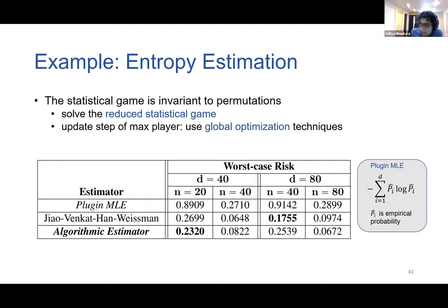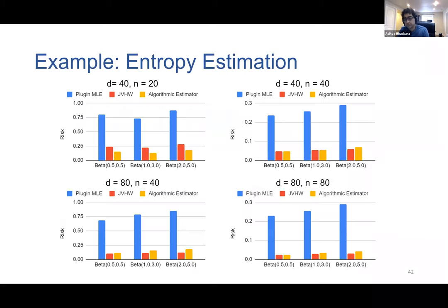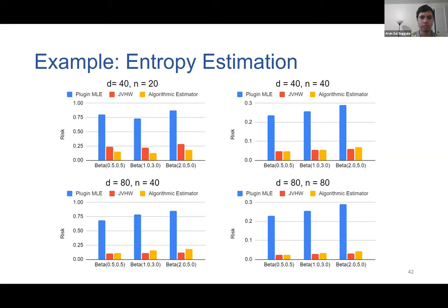Experimental results for entropy estimation: we compare our algorithmic estimator with the plugin MLE baseline and the minimax estimator of Jiao et al. In high-dimensional settings, the plugin MLE is very suboptimal with bad worst-case risk. Our algorithmic estimators have very similar performance to the minimax estimator of Jiao et al. This is notable because it took decades of work to design minimax estimators for entropy estimation, and we can do this algorithmically and efficiently. We also compare on various power-law distributions occurring in practice, where our estimator performs similarly to Jiao et al. and much better than the plugin estimator.